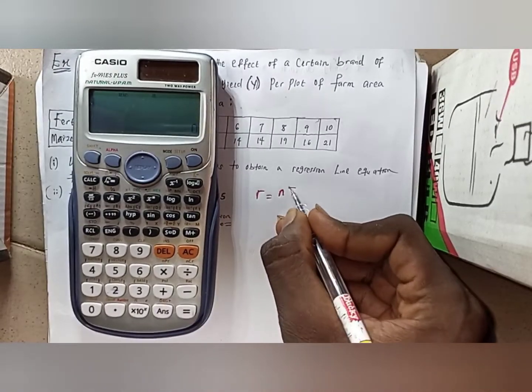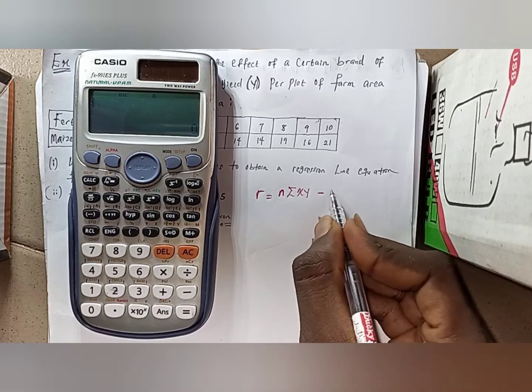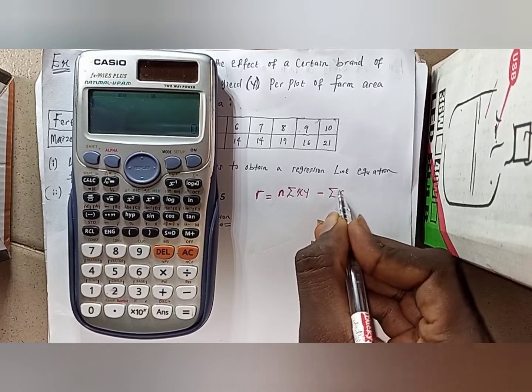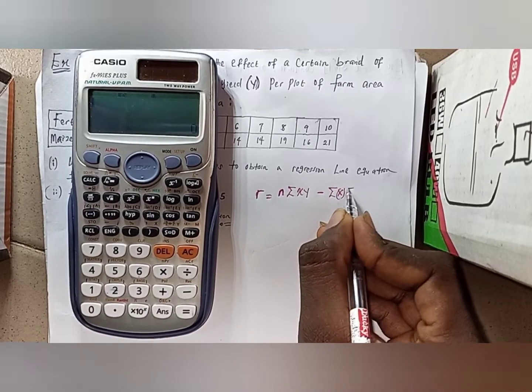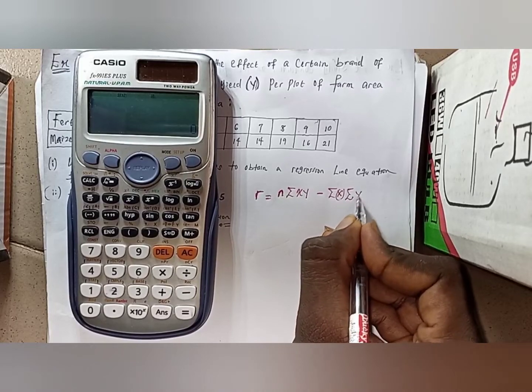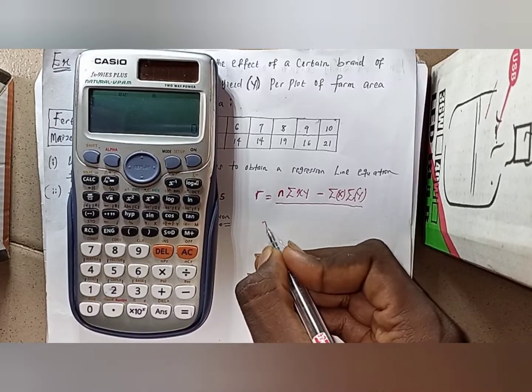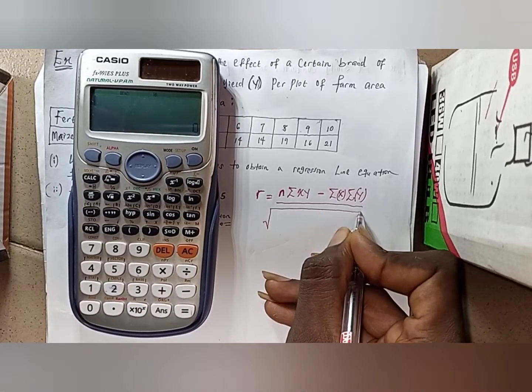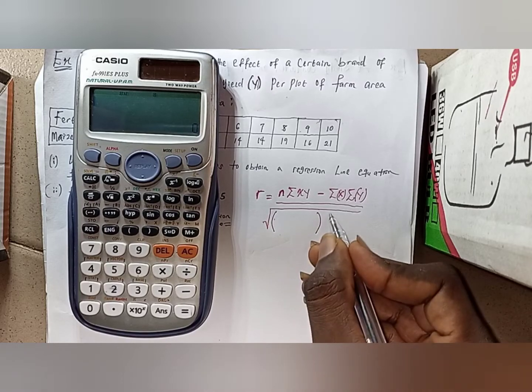The formula for the Pearson correlation coefficient is given as n times summation of the variable x times the variable y, minus the summation of the set of data you have for x, multiplied by the summation of all the data that you have for y.